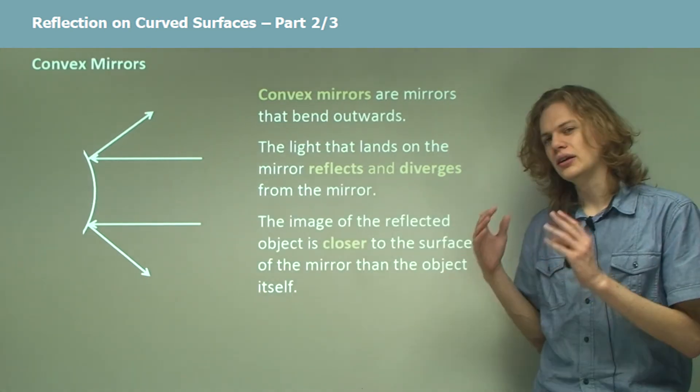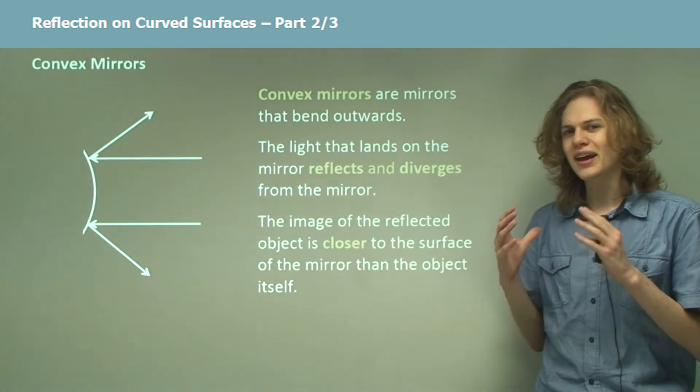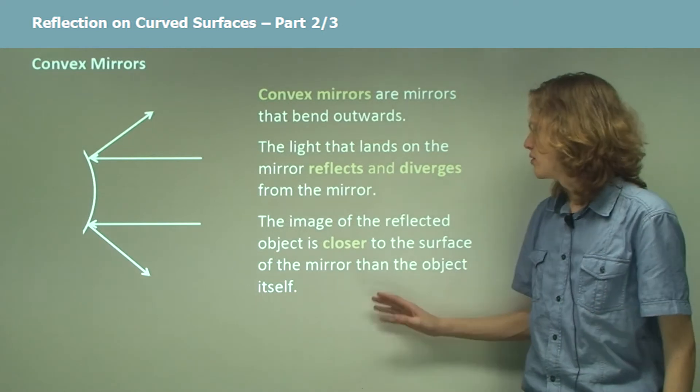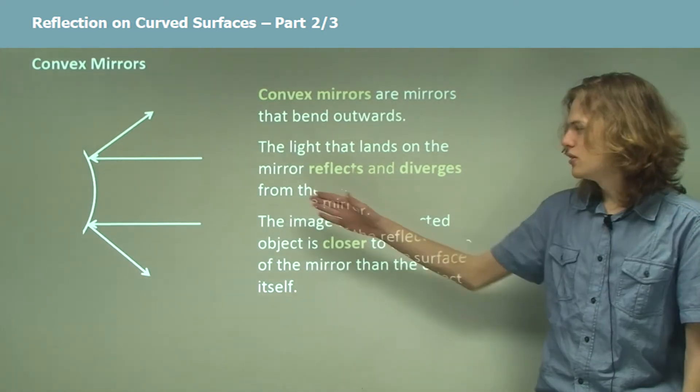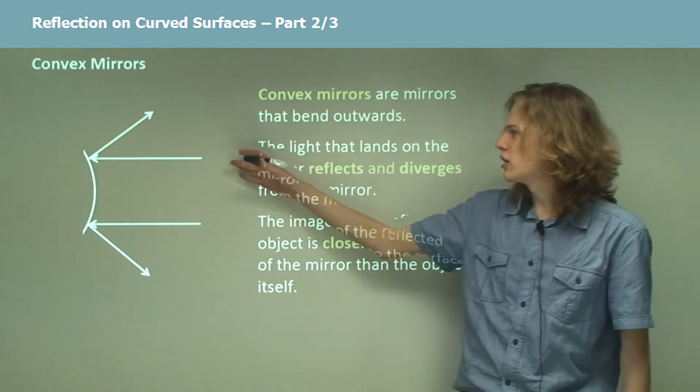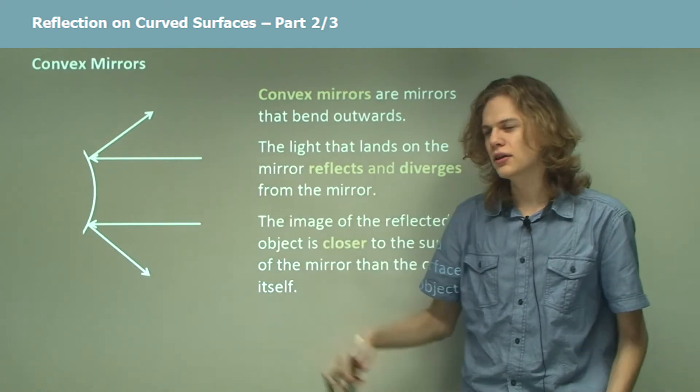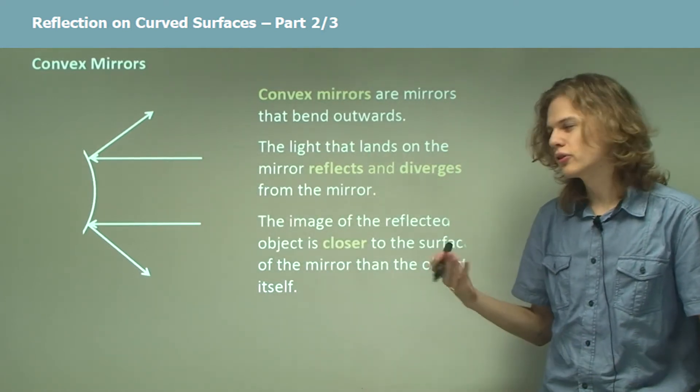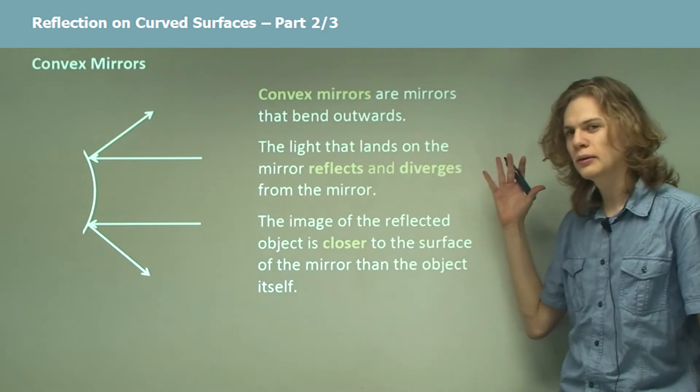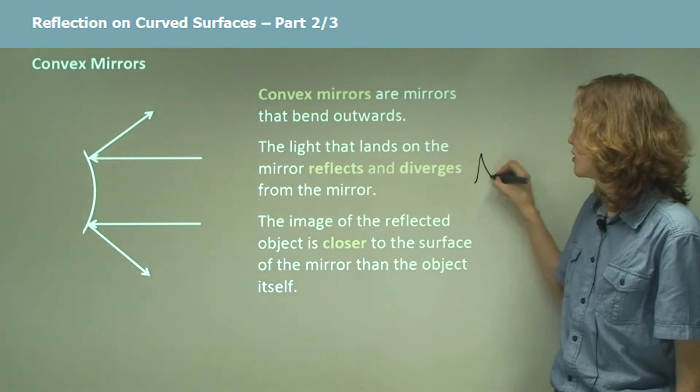What this means is that the image of the reflected object is closer to the mirror than the original object itself. In this example, when light comes in parallel to an object like this, it means that the source of the light is very far away, perhaps all the way on the other side of the page.